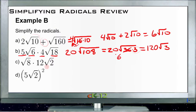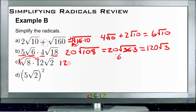For C, we have 1 square root of 8 times 12 square roots of 2. So we're just going to multiply the outside numbers: 1 times 12 is 12. And 8 times 2 is 16. So we have 12 roots of 16. And the root of 16 is whole — it's 4. So we have 12 times 4, or 48.